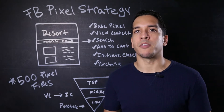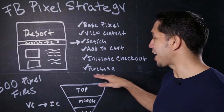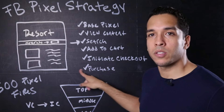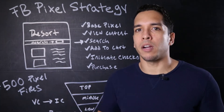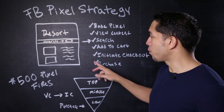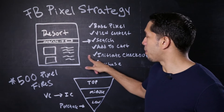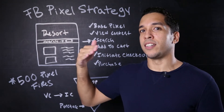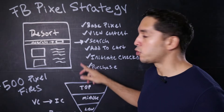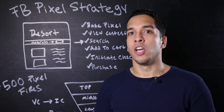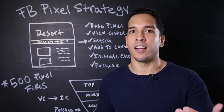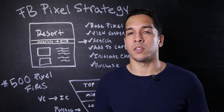They were also probably comparing different options. So in this situation, it was actually not optimal to optimize for purchases, because there was such a huge drop-off between initiate checkout and purchase — it made it very hard for Facebook to find these people as we didn't have enough purchases happening online. So what we did is we ended up optimizing for initiate checkout, which was the standard event before that we were getting a lot of volume from. What ended up happening is that the website traffic exploded, and we also increased the bookings we saw in other channels as well as Facebook.